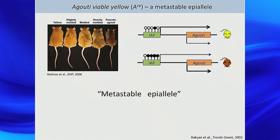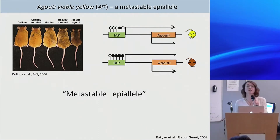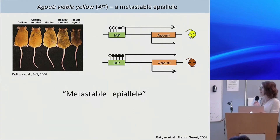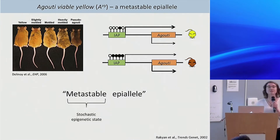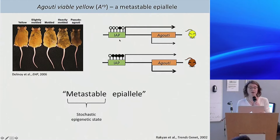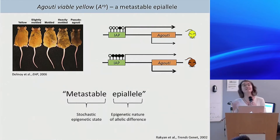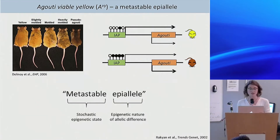We call this type of locus a metastable epiallele. The word metastable was actually used by people in the plant world before mammals, but Emma Whitelaw coined the term metastable epiallele in the context of mammals in 2002. Metastable represents that stochastic epigenetic state — it's not stable, it can be lowly methylated, highly methylated, or anything in between. And epiallele because this isn't genetically driven; there's no genetic difference between the two alleles driving the phenotypic difference — it's epigenetic in nature.